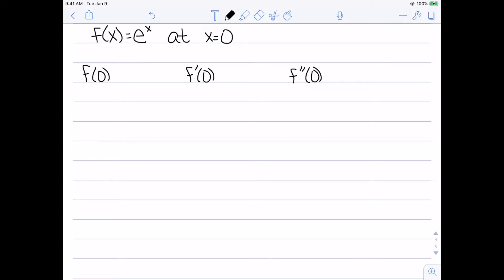We know that e^0 is 1. The derivative of e^x is e^x, and e^0 is 1. And then we have the same thing for the second derivative. The second derivative of e^x is still e^x, so we still have e^0, which is 1.